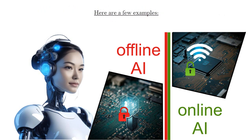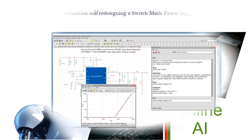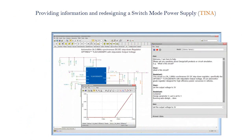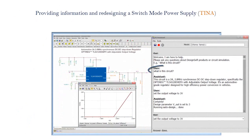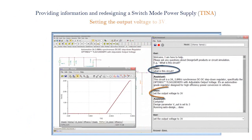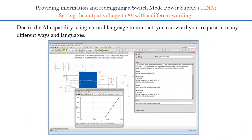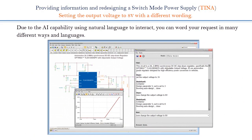Here are a few examples. First, providing information and redesigning a switch mode power supply in TINA — setting the output voltage to 3 volts. Due to the AI capability using natural language to interact, you can word your request in many different ways and languages.